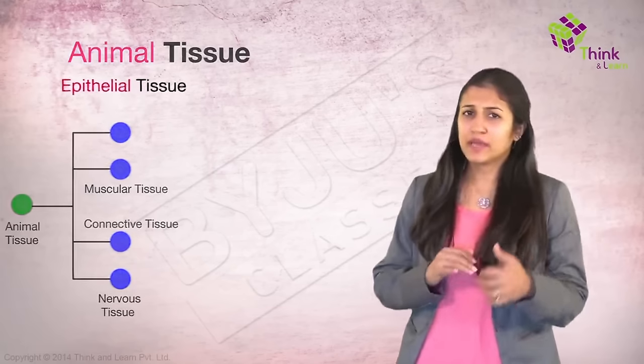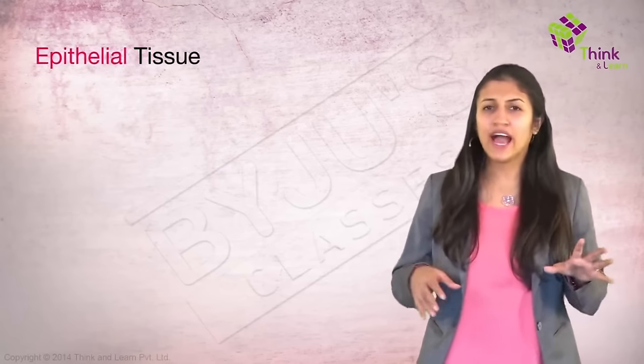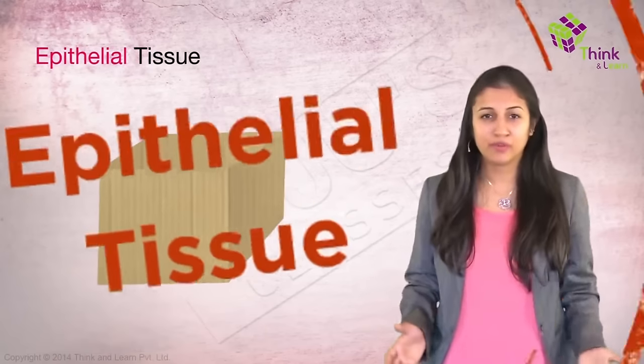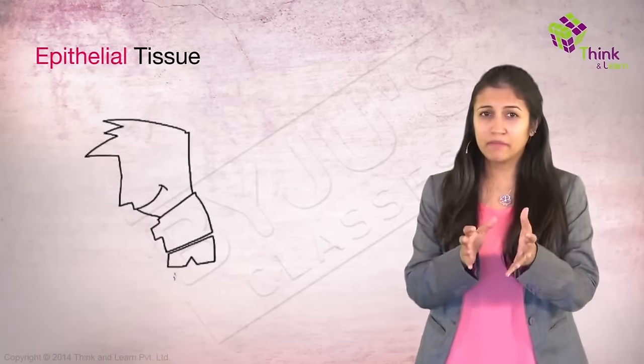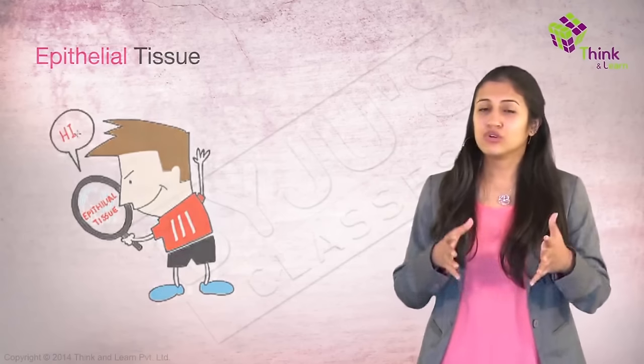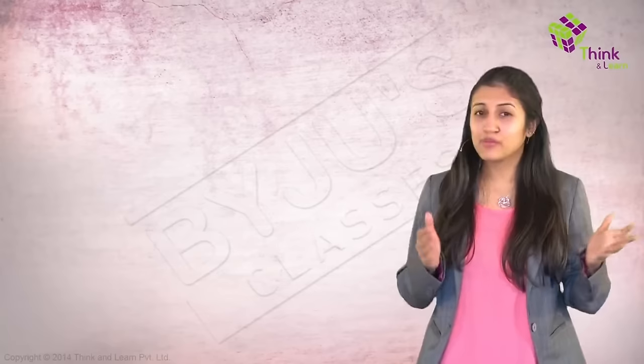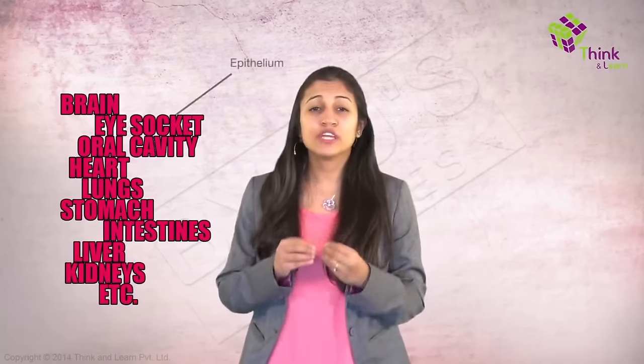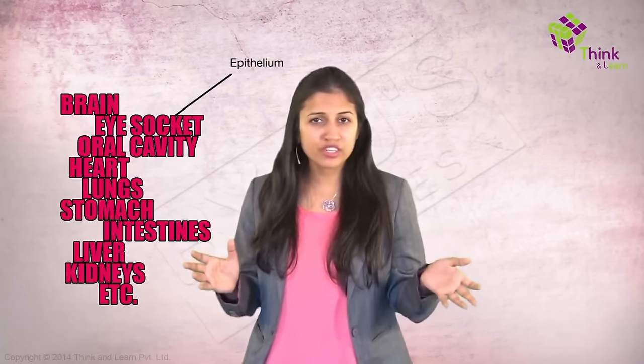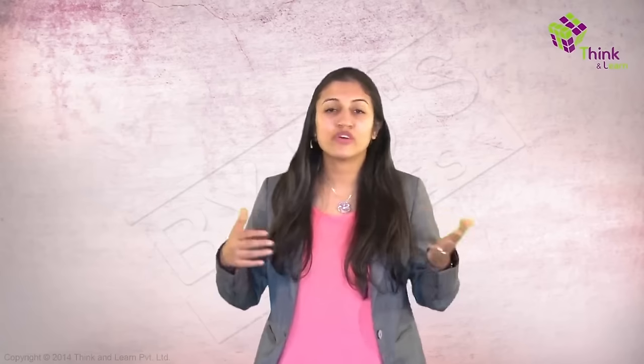First up is the epithelial tissue. You can think of them as the thin packing or covering material of pretty much everything in our body. If you look at yourself in the mirror, most of what you see is epithelial tissue. They are the covering and protecting tissues of our body. Epithelium covers most organs and cavities within the body. It also forms a barrier to keep different body systems separate so that they can go about their own function without interfering in other organ system functions.